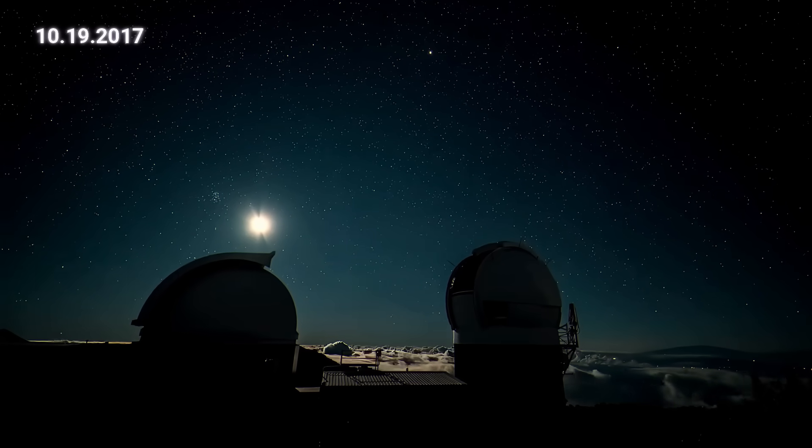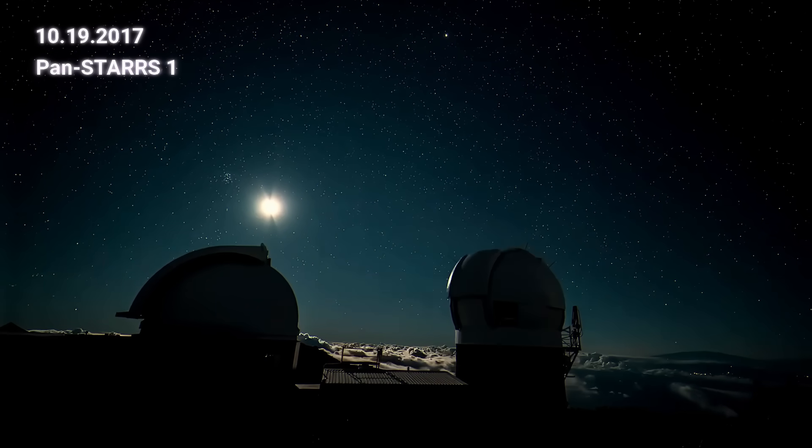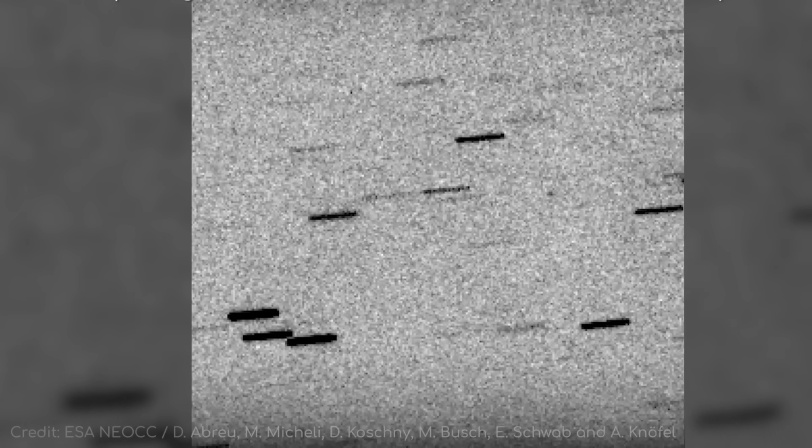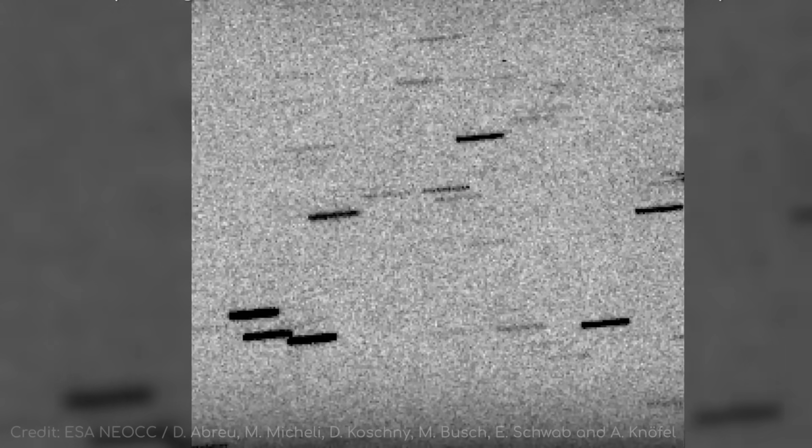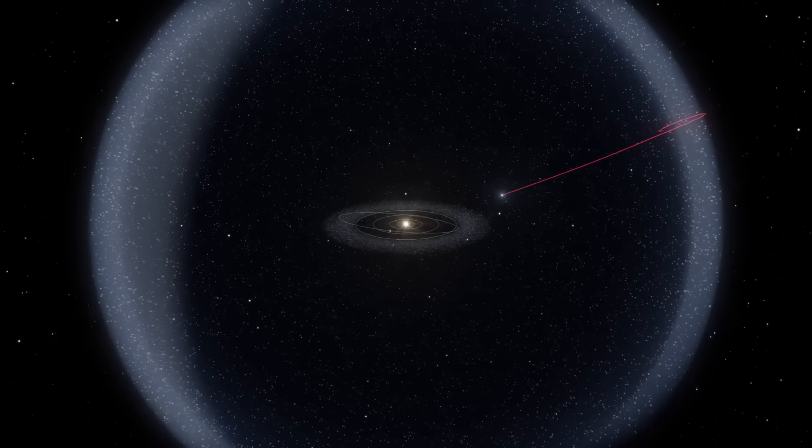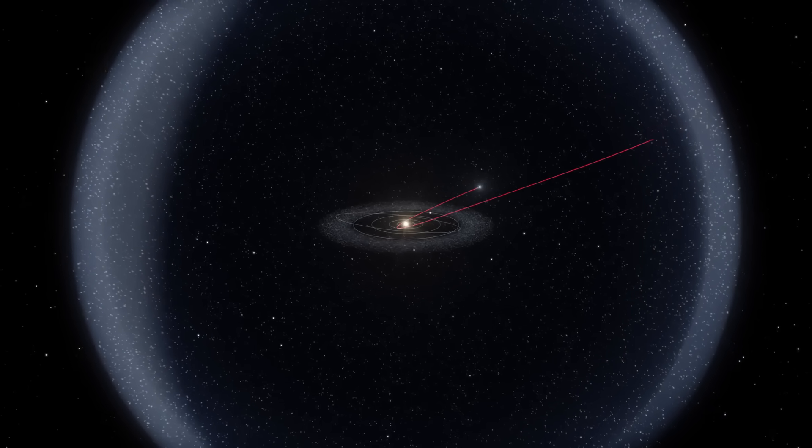October 19th, 2017. Pan-STARRS 1 is scanning the night sky. At 1:22 Hawaiian Standard Time, a sliver of pixels dashes across the frame, noticeably faster than the usual background clutter. A few hours later at a workstation in the University of Hawaii's data center, astronomer Robert Weryk scans those images and notices a streak racing faster than a space rock should. The object is clocking an inbound speed of 26 kilometers per second, and with an eccentricity of 1.20. Its path is an escape ramp, a trajectory that will swing past the sun once, then fling back into space, never to loop around again.